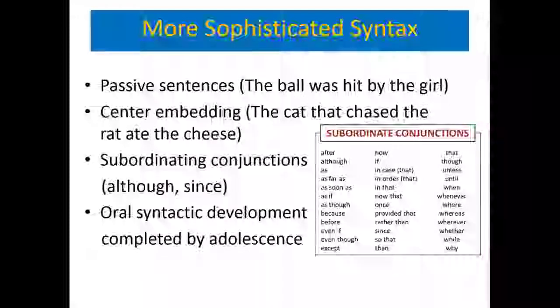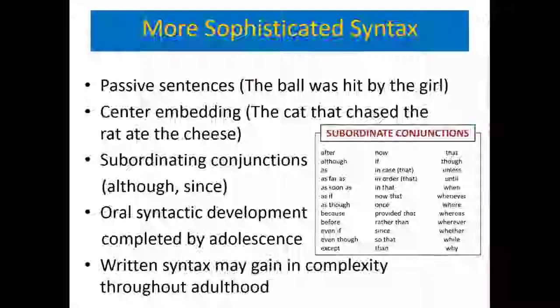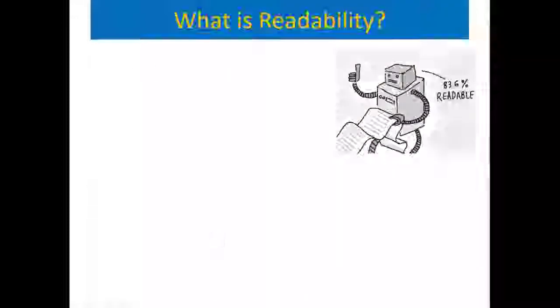Generally, oral syntactic development is completed by adolescence, so students have a good handle on derivational morphemes and different kinds of prefixes. They understand and can produce complex sentences. In typical development, syntactic development is completed by adolescence, while written syntax may gain in complexity throughout adulthood — particularly if you write frequently in your occupation. However, this is not true for children with language disorders, whose development is very much delayed by adolescence, and they end up dropping out of school.